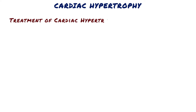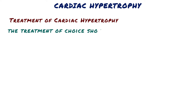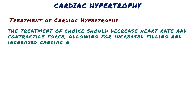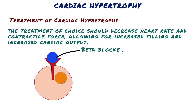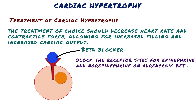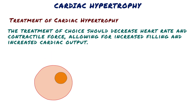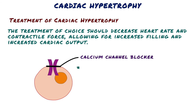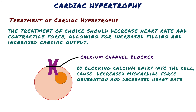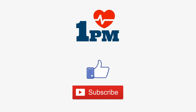Treatment of cardiac hypertrophy: If the hypertrophied heart has a smaller chamber size and does not fill optimally, the treatment of choice should decrease heart rate and contractile force, allowing for increased filling and increased cardiac output. Beta blockers — competitive antagonists that block receptor sites for epinephrine and norepinephrine on adrenergic beta receptors of the sympathetic nervous system — and calcium channel blockers, by blocking calcium entry into the cell, cause decreased myocardial force generation and decreased heart rate. So beta blockers and calcium channel blockers accomplish these goals.